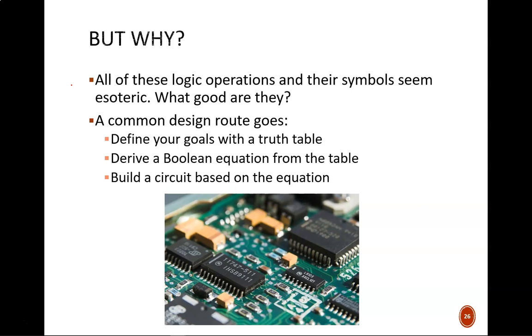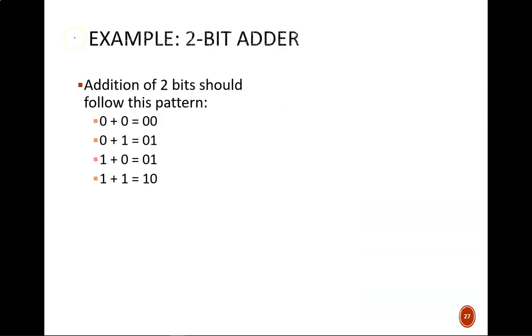A simple design route that we will employ soon in this class is: one, define your goals with the truth table; two, derive a Boolean equation from that table; and three, build a circuit from that equation. Let's see this in action with a simple example, a circuit that can add two bits together.